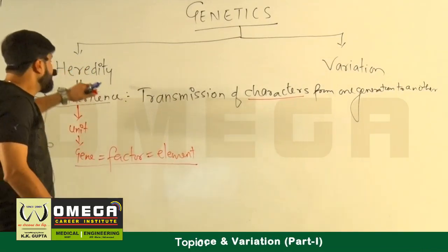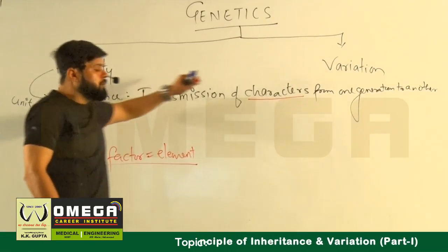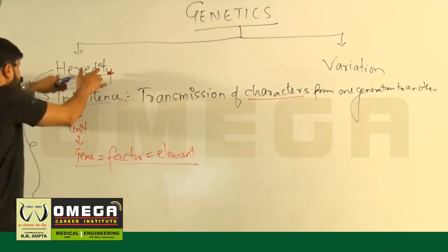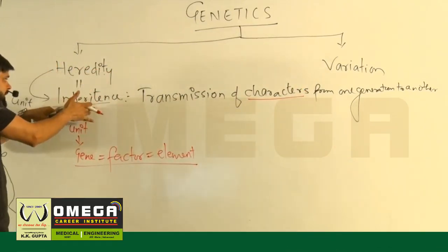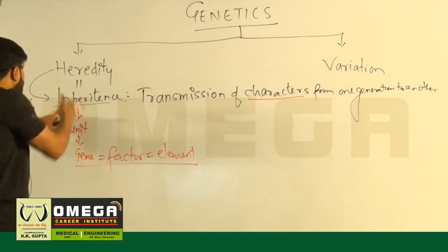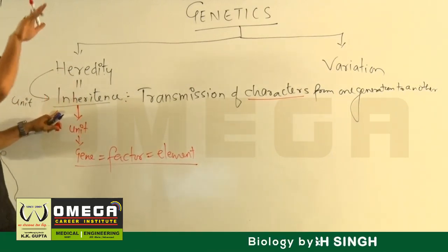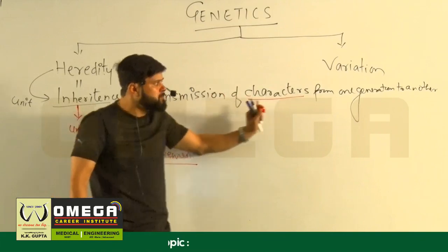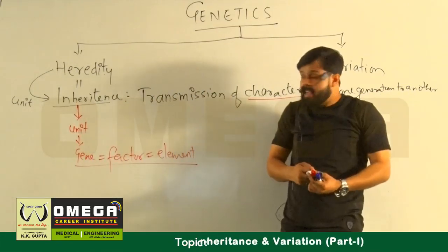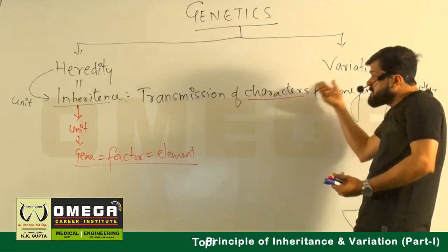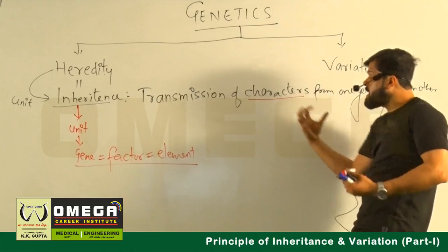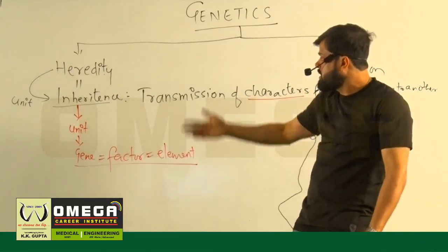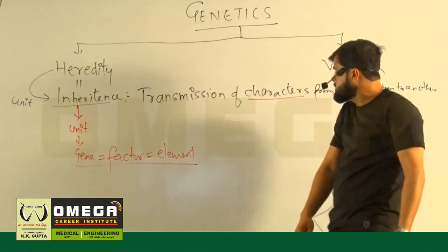To recap: genetics has two things — heredity and variation. Heredity is the main branch in which we study inheritance. Inheritance is the transmission of characters from one generation to another.